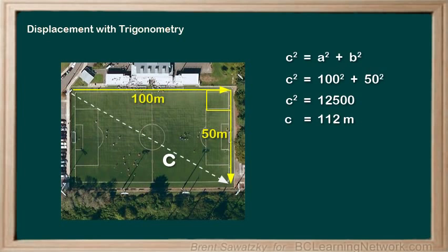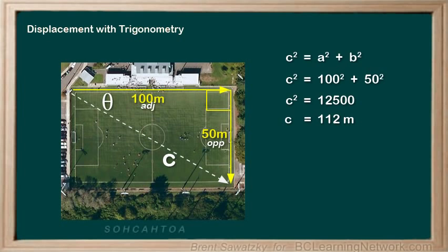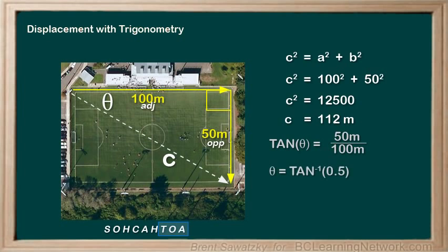For the direction, we can be more specific. If we identify this angle as theta, a common variable for an angle, we need a way to determine what theta is. We can see that 50 is opposite of theta, and 100 is adjacent to theta. So, thinking back to SOHCAHTOA, we can determine theta using the tangent ratio — opposite over adjacent. Plugging it all in and solving for theta using inverse tan, we get 26.6 degrees.